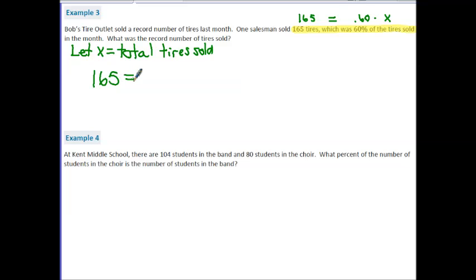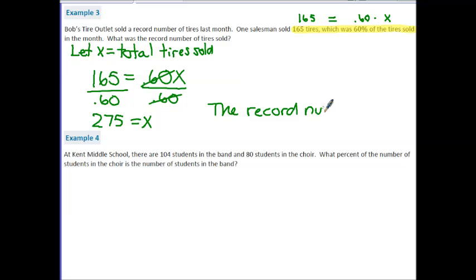165 is equal to 0.60X. So just like our previous question, this is a one-step problem. I have multiplying here, so I would want to divide both sides by 0.60. Cancelling these, leaving me with X equals 275. And so our final answer here is the record number of tires sold was 275.